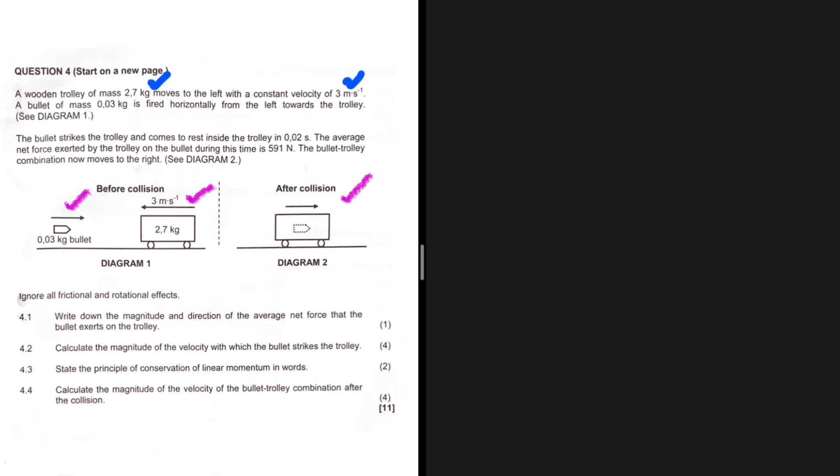The bullet strikes the trolley and comes to rest inside the trolley in 0.02 seconds. The average net force exerted by the trolley on the bullet during this time is 591 N. The bullet-trolley combination now moves to the right, as we can clearly see in diagram 2.